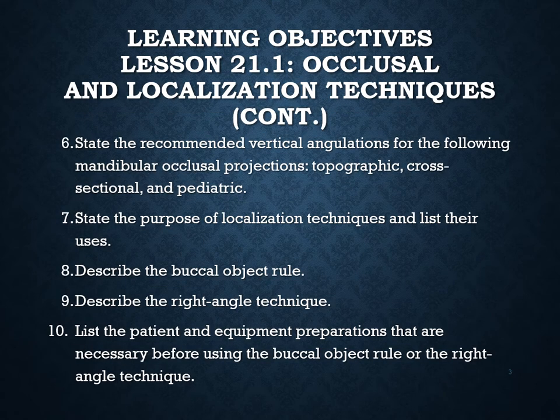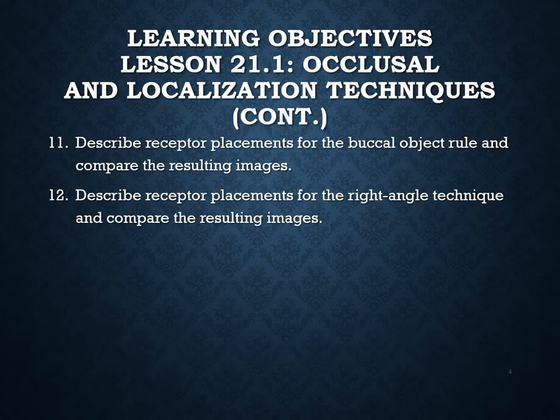You should be able to state the recommended vertical angulation for the following mandibular occlusal projections: topographic, cross-sectional, and pediatric. State the purpose of localization techniques and their uses. Describe the buccal object rule. Describe the right angle technique. List the patient and equipment preparations necessary before using the buccal object rule or the right angle technique. Describe receptor placements for both techniques and compare the resulting images.